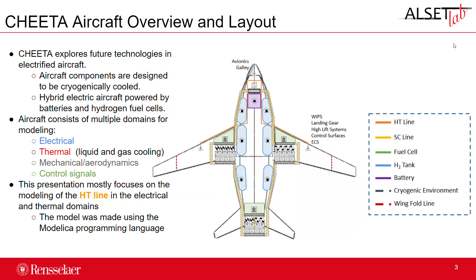Cheetah is a program that explores future technologies and electrified aircraft. We're developing a hybrid electric aircraft powered by both batteries and hydrogen fuel cells, and the aircraft components are designed to be cryogenically cooled using liquid hydrogen. We're developing all of the models for the electric aircraft design. Our models consist of multi-domains for mathematical modeling, including the electrical domain, thermal domain for liquid and gas cooling, the mechanical domain, aerodynamics, and control. Here we're focusing on modeling the HTS power lines in the electrical and thermal domains, developed using the Modelica programming language.